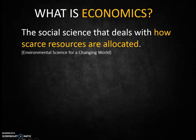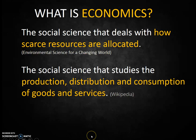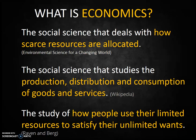Here's your book definition: the social science that deals with how scarce resources are allocated. And also a definition from Wikipedia: the social science that studies the production, distribution, and consumption of goods and services. They say pretty much the same thing. The first definition stresses that generally resources are limited, and the second definition focuses on the details of allocation. My favorite definition comes from another textbook called Environment by Raven and Berg. It says that economics is the study of how people use their limited resources to satisfy their unlimited wants. This definition is very similar to our textbook definition, as it reminds us that resources are not unlimited.